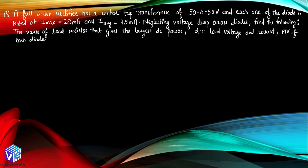The first question for the day is: a full wave rectifier has a center tap transformer of 50-0-50 volt and each diode is rated at I_max equal to 20 milliampere and I_average equal to 75 milliampere. Neglecting voltage drop across the diode, find the load resistor that gives the largest DC power, DC load voltage and current, and the PIV of each diode.